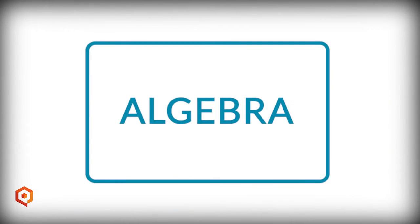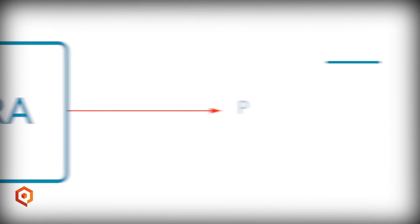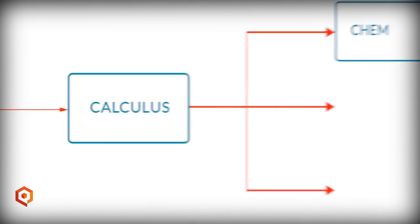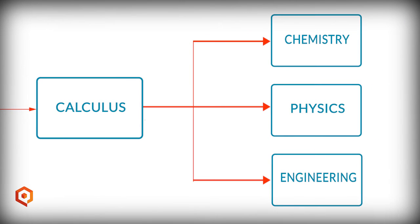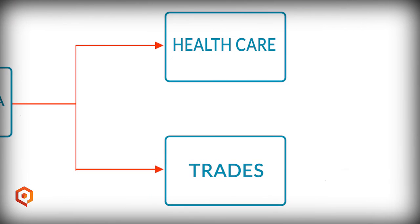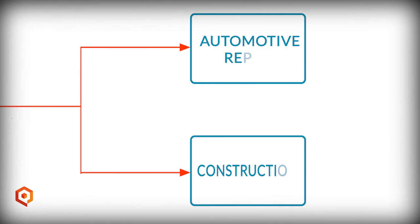By doing the basic algebra first, we can go in the direction of adding more advanced mathematics such as precalculus and calculus, and from there we can go on to chemistry, physics, and engineering. Or we can pick up pre-algebra and apply it to professions like health care or trades like automotive repair and construction.